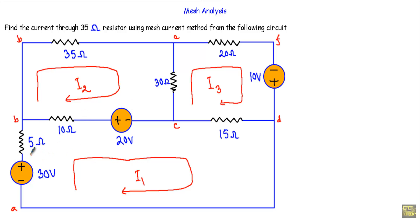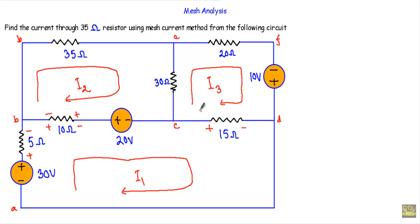This 5 ohm resistor is inside mesh 1. I1 is entering from this direction and leaving from this direction, so this terminal should be positive and this terminal should be negative. As this 10 ohm resistor is placed between mesh 1 and mesh 2, I will indicate the polarity of this 10 ohm resistor on both sides. I1 will be entering from this direction so this terminal is positive and this terminal is negative. I2 will be entering from this direction so this terminal is positive and this terminal is negative.